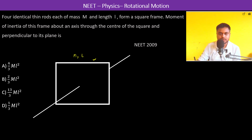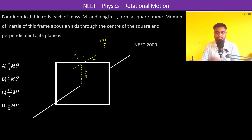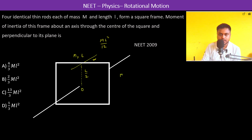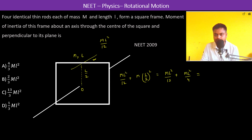About this axis, the moment of inertia is M L squared by 12. This rod is at a distance of L by 2 from the center O, so the moment of inertia about point O is M L squared by 12 plus M times (L/2) squared, which equals M L squared by 12 plus M L squared by 4.